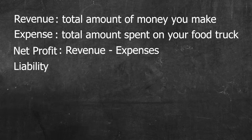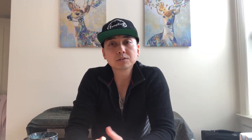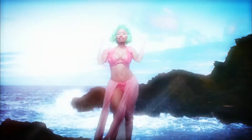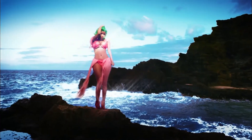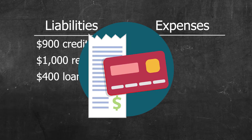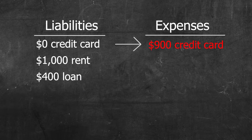Liability. In finance, a liability is any money that you owe that you haven't paid yet. Common liabilities include loans, credit card bills, rent. When you make a full payment on a credit card for your food truck, that payment now becomes an expense and your credit card liability becomes zero.